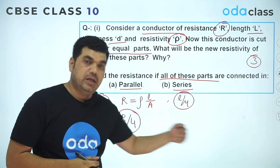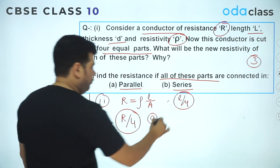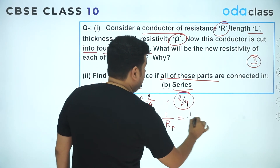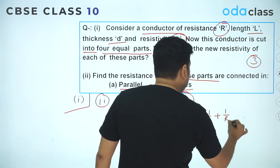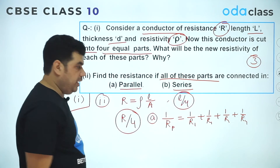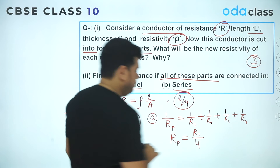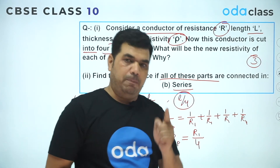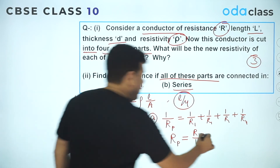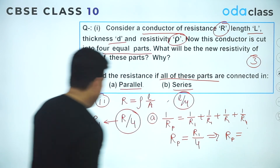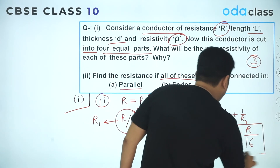For part (a), if all four parts — each with resistance R/4 — are connected in parallel: using 1/R_parallel = 1/R1 + 1/R1 + 1/R1 + 1/R1, which gives 4/R1. So R_parallel = R1/4. Since R1 = R/4, substituting gives R_parallel = (R/4)/4 = R/16. The answer for the parallel combination is R/16.